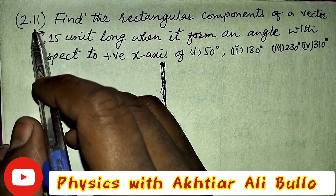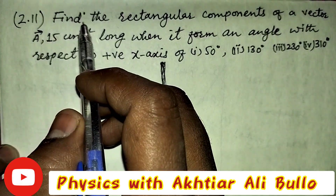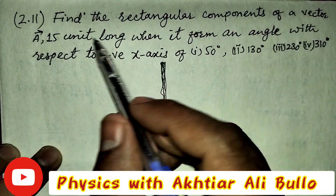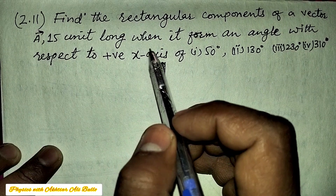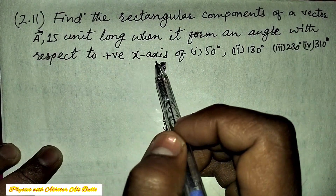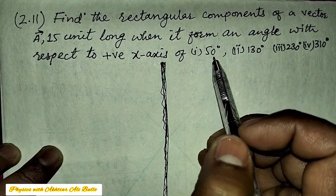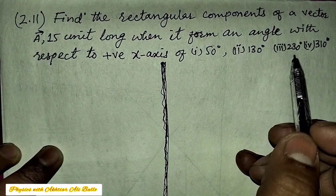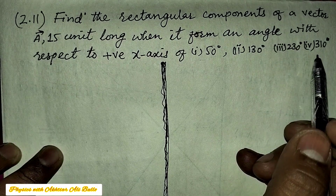Problem number 2.11: Find the rectangular components of a vector A, 15 units long, when it forms an angle with respect to the positive x-axis of: (1) 50 degrees, (2) 130 degrees, (3) 230 degrees, (4) 310 degrees.